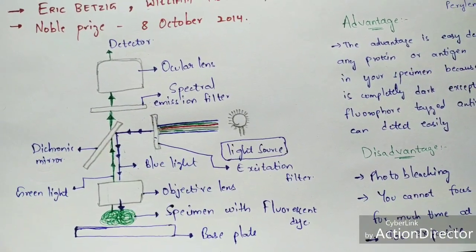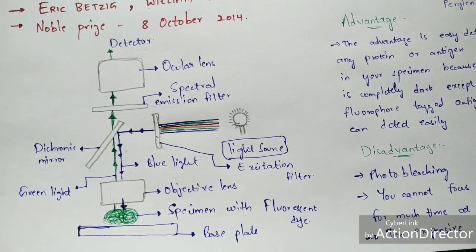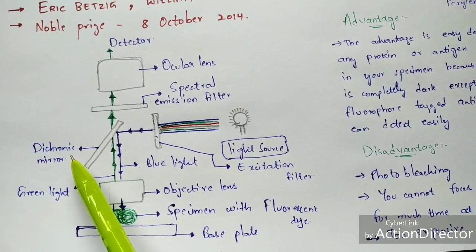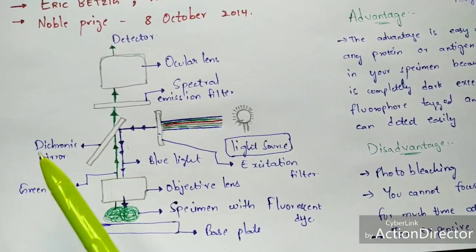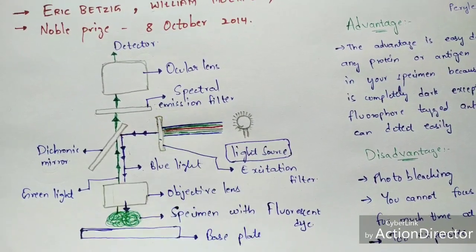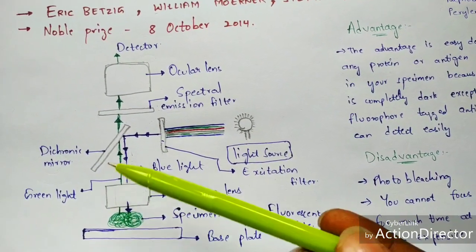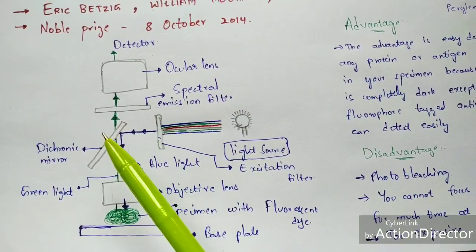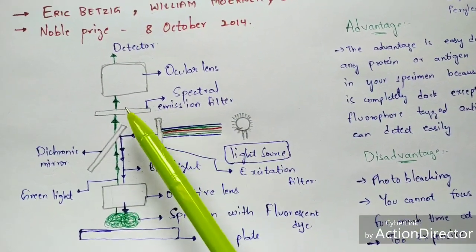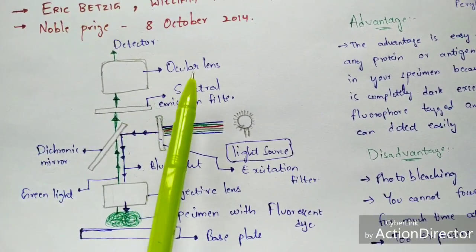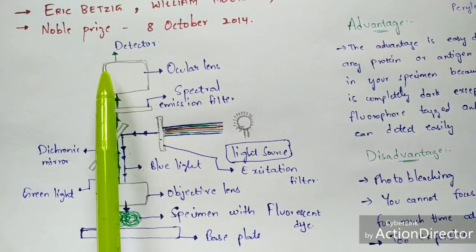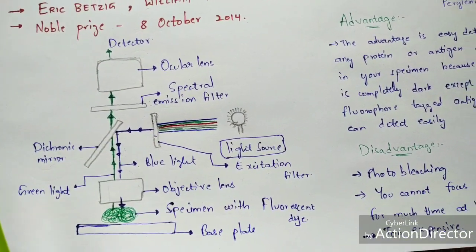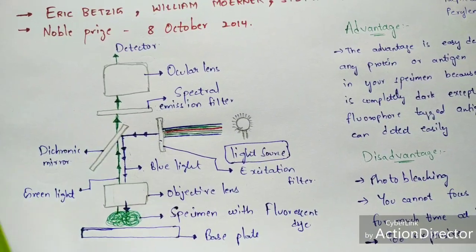The major function of the spectral emission filter is to detect and block the remaining blue color light that has passed through. Only the pure green color light is allowed to pass to the ocular lens. From the ocular lens, the signal is sent to the detector, which forms the image. We can then see the image formed on the detector.